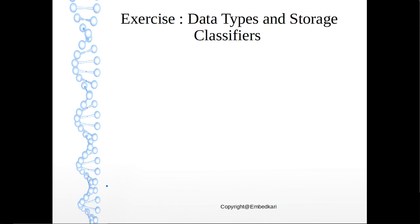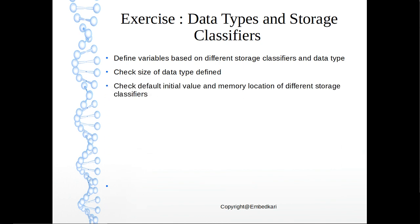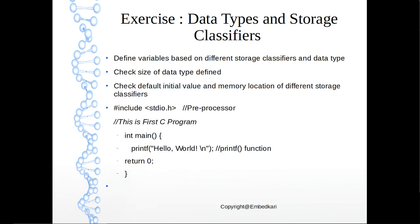So here is the exercise, first exercise we will do for this. What we need to do: define a variable based on different storage specifiers—auto, static, or different kinds of data types—and check the size of the data type defined. As I told you, different data types are character and all those kinds of things. And check the default initial value and memory locations of different storage classifiers. And this will be the first project. So this complete exercise will be part of the workshop.